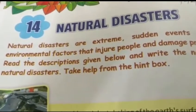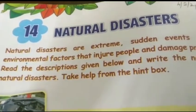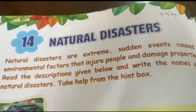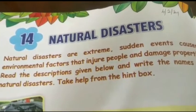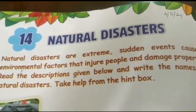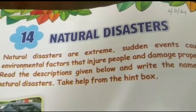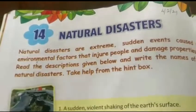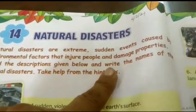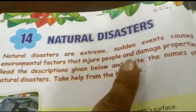Natural means it is related to nature. And one type of disaster is man-made — it happens because of our mistakes, because of human beings. Disaster means an event in which there is a lot of damage, a lot of hurt, and a lot of people are dead. So disasters can be natural and man-made. Natural disasters are extreme, sudden events caused by environmental factors that injure people and damage properties.